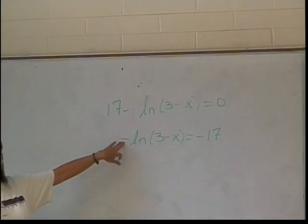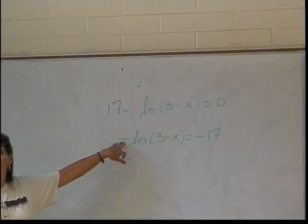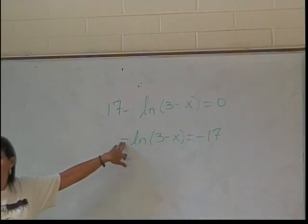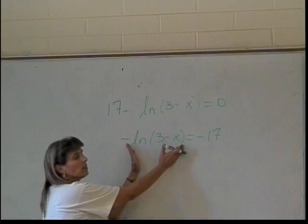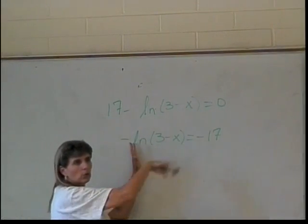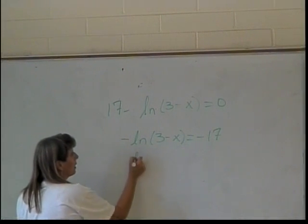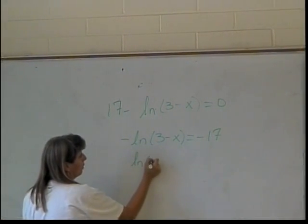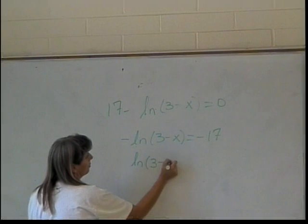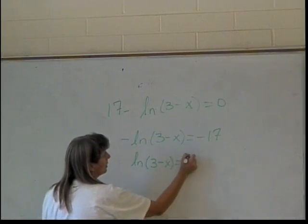Yes. It's really important to get the negative out from in front of the natural log. If you don't remove it, it messes your life up. You need just a natural log that's positive in order to change to exponential form. So we'll multiply both sides by negative 1 or divide by negative 1. It gives us natural log of 3 minus x equals positive 17.